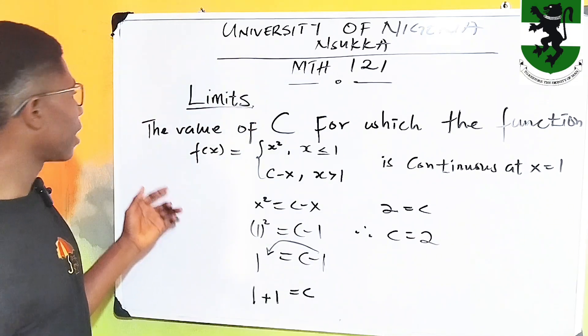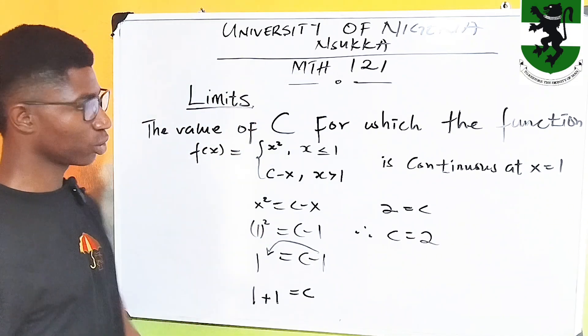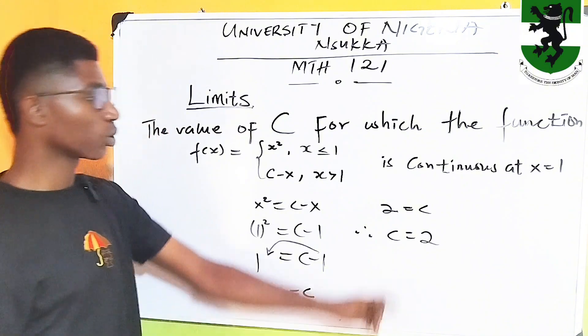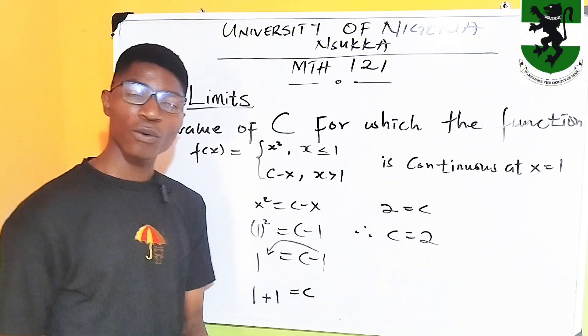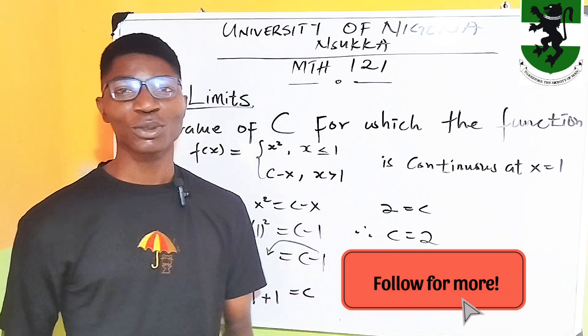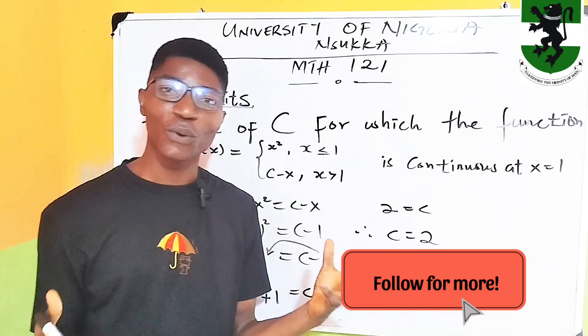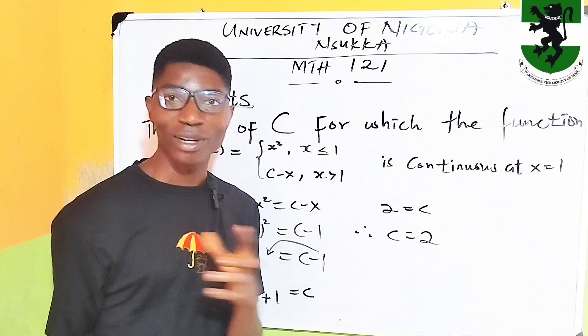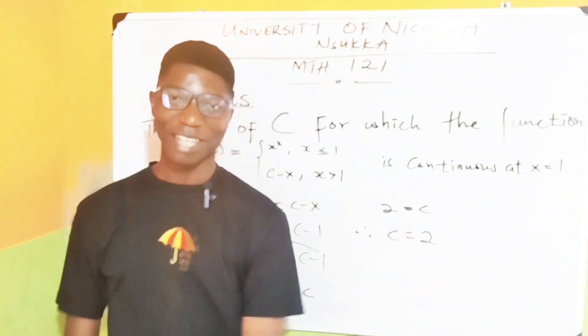So, the value of c for which the function is continuous at x equals 1 is 2. Thank you for watching. Please do well to like, follow, subscribe, repost, and also comment if you want more. Type I want more in the comment section. Catch you next time. Bye.